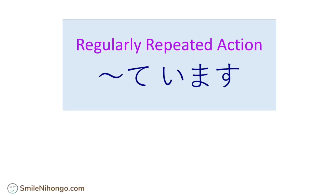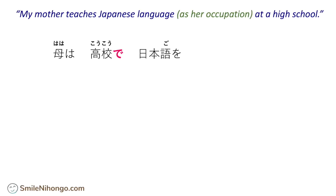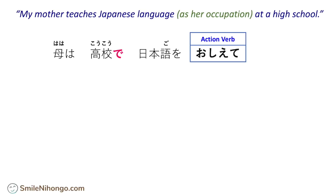Te-form imasu for regularly repeated actions. Here's the first example sentence: My mother teaches Japanese language at high school — and this is her job. You have to use the te-imasu expression because this is something she does every single day over and over again at her work. So first, you say my mother — as we learned, you use ha-ha. Ha-ha wa, at the high school — kou-kou-de, Japanese language — ni-hong-go-wo, and then the te-form of teach — o-sh-e-te imasu.